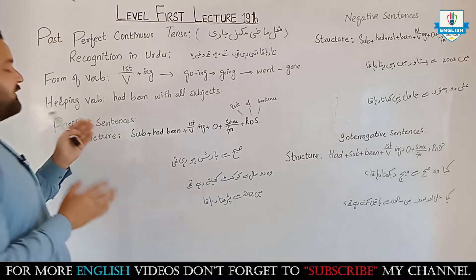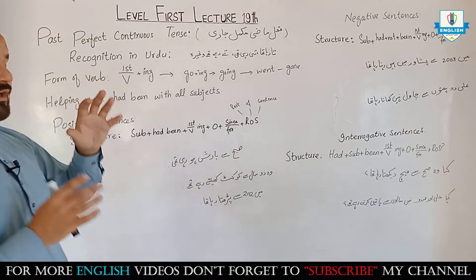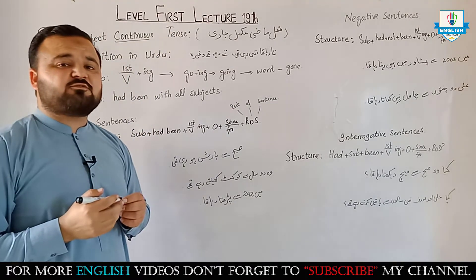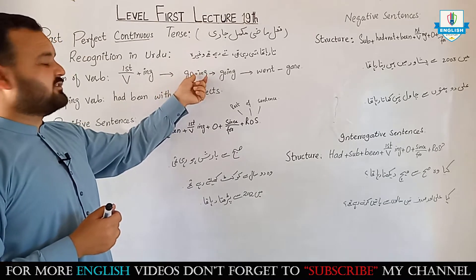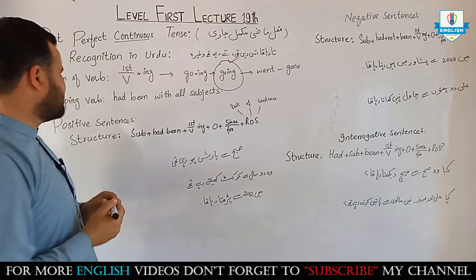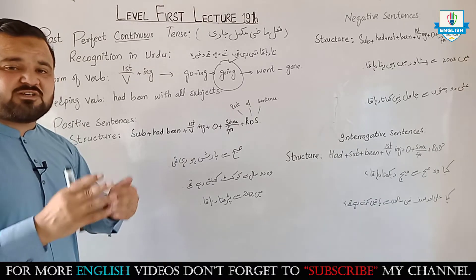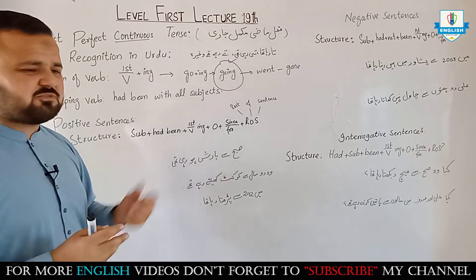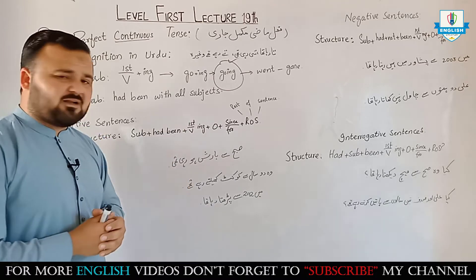What will be the form of the word in past perfect continuous tense? When you see the word 'continuous', it means there should be the first form of the word plus '-ing'. So first form of word plus '-ing' — for example, 'going'. As for the helping word, 'had been' will be used with all subjects: he, she, singular name, plural name, I, we, you, they — 'had been' is used with all of them.